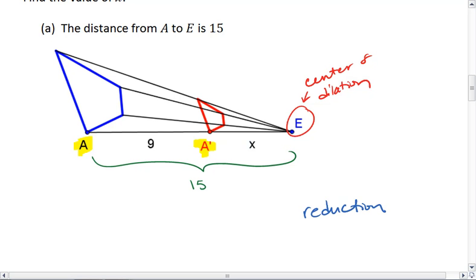If the distance from A to E is 15, then from A prime to E is only 6. So we're going from a distance of A to E of 15 to a distance of 6. This is a 6 to 15 ratio which reduces down to 2/5. So it's a reduction and K is 2/5, because this distance here from A prime to E is 2/5 of the distance of A to E.